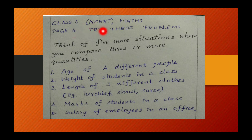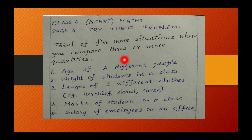This is from the Class 6 NCERT textbook, Maths, page 4 — 'Try These' problems. The question says: think of five more situations where you compare three or more quantities. So we have to make five situations where we can compare three or more quantities.